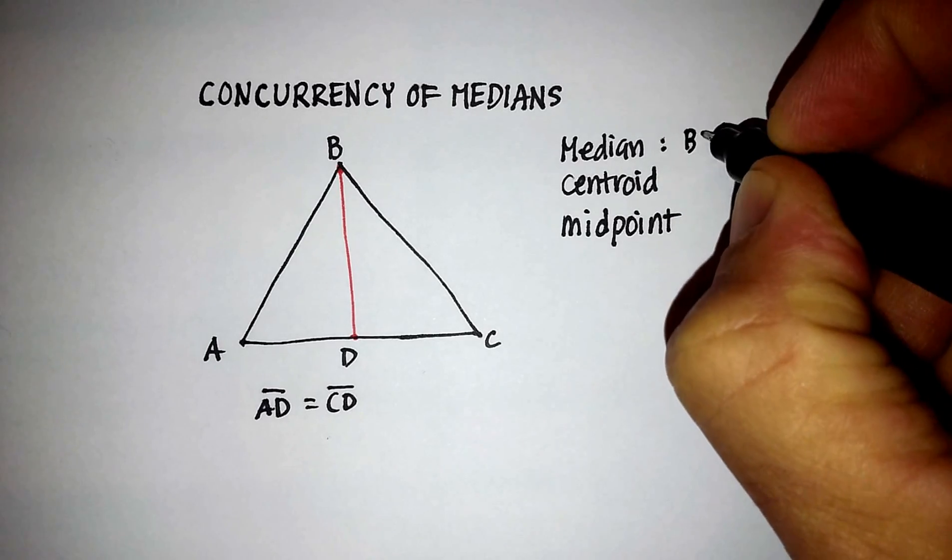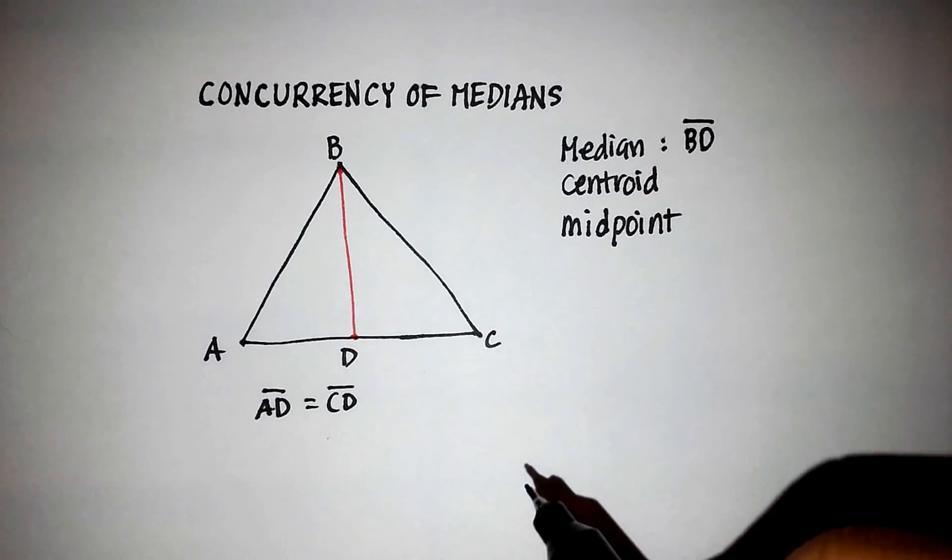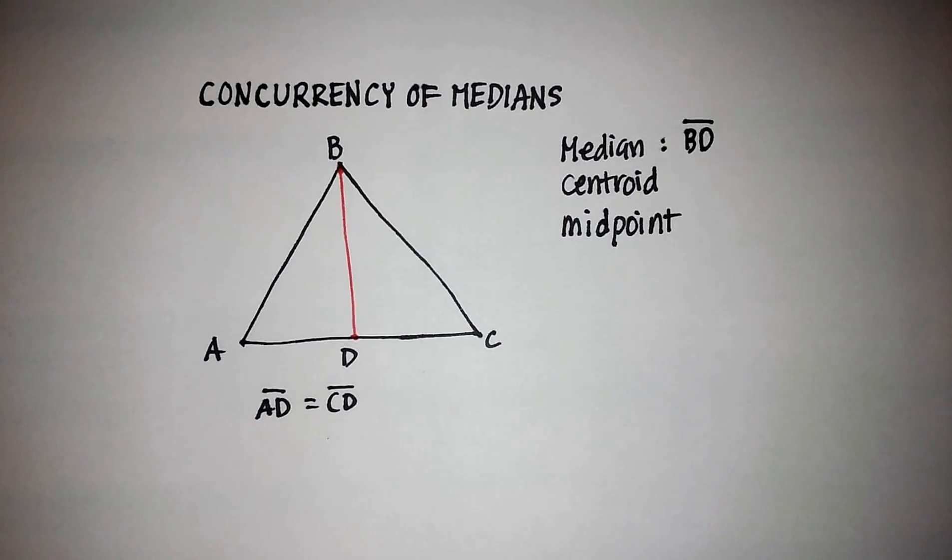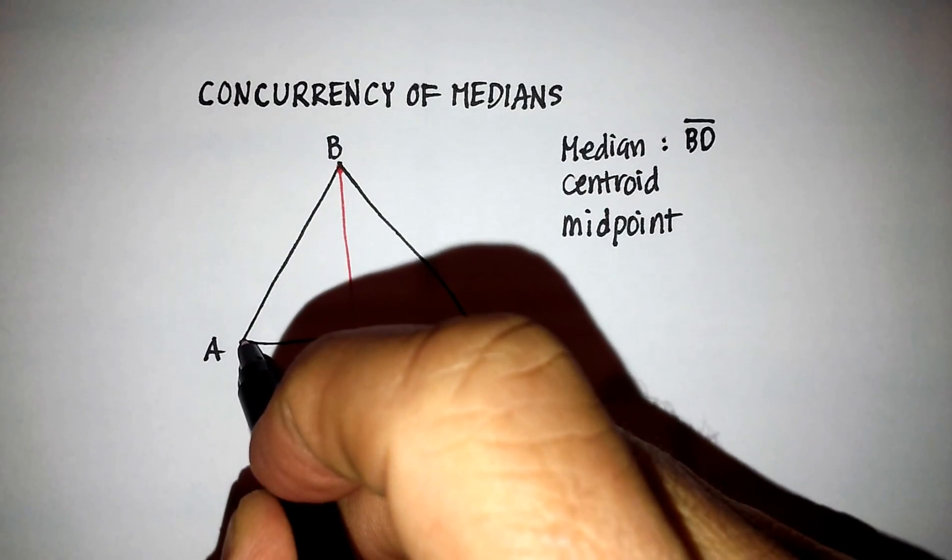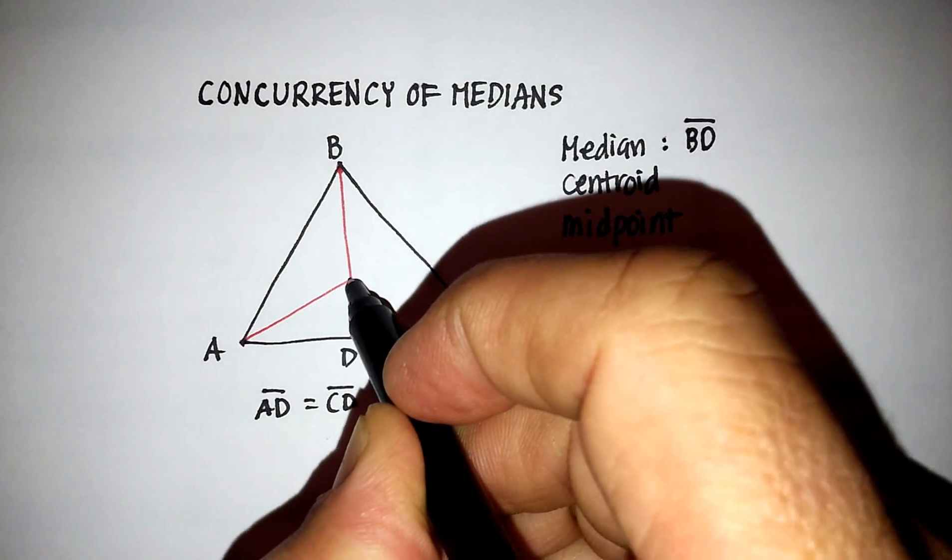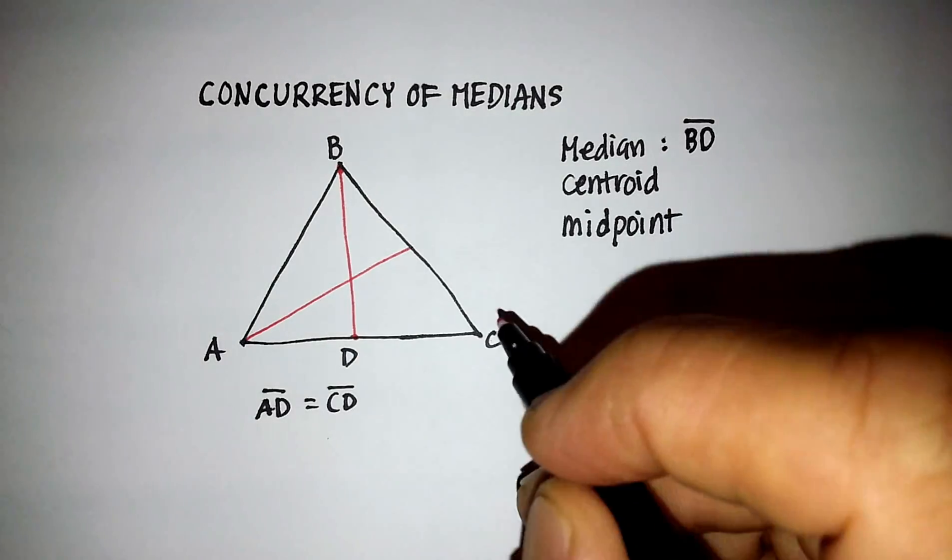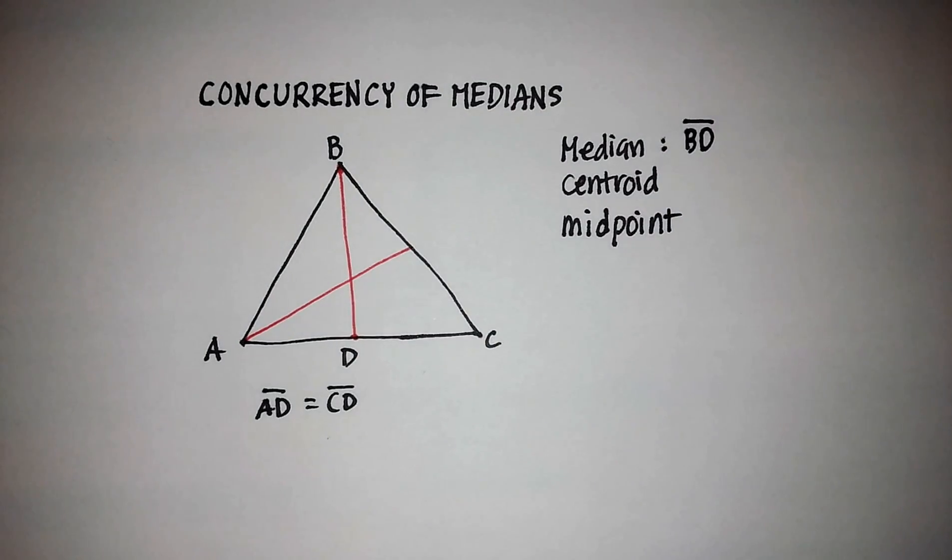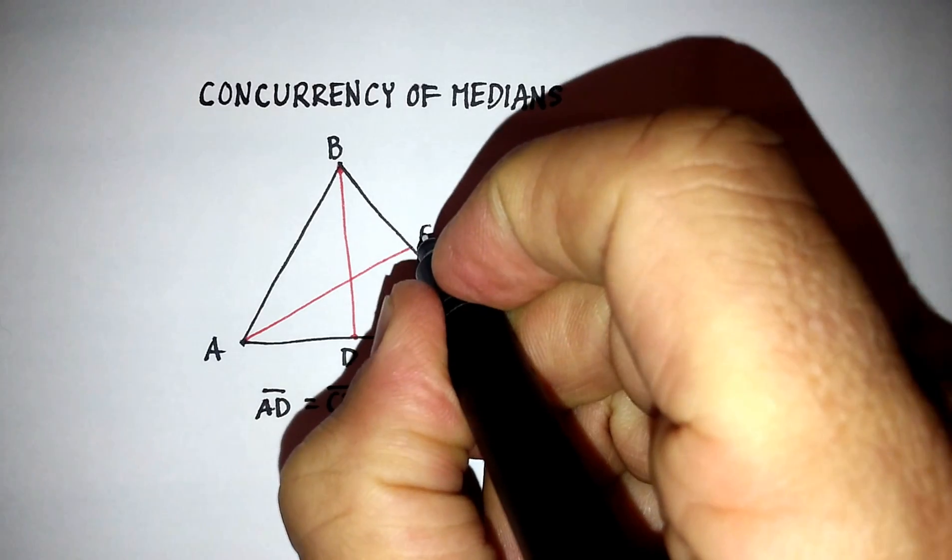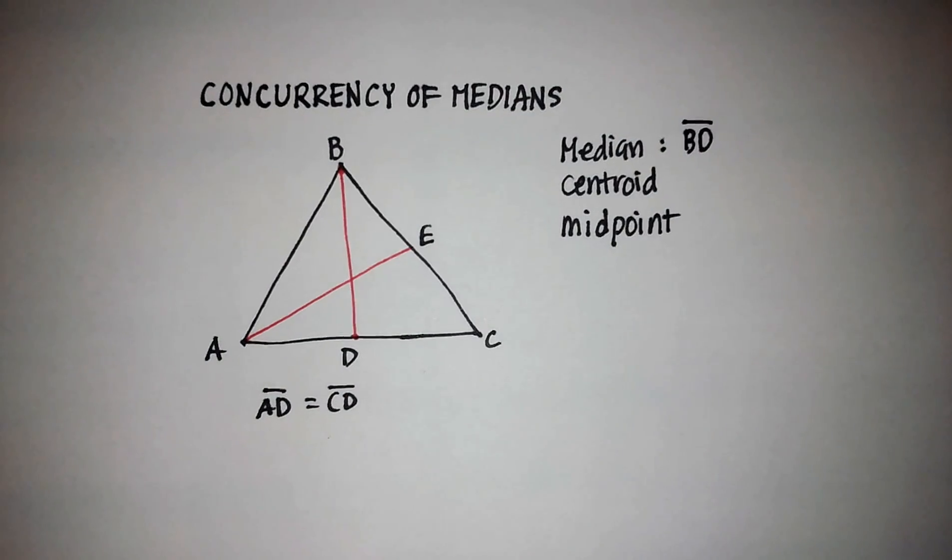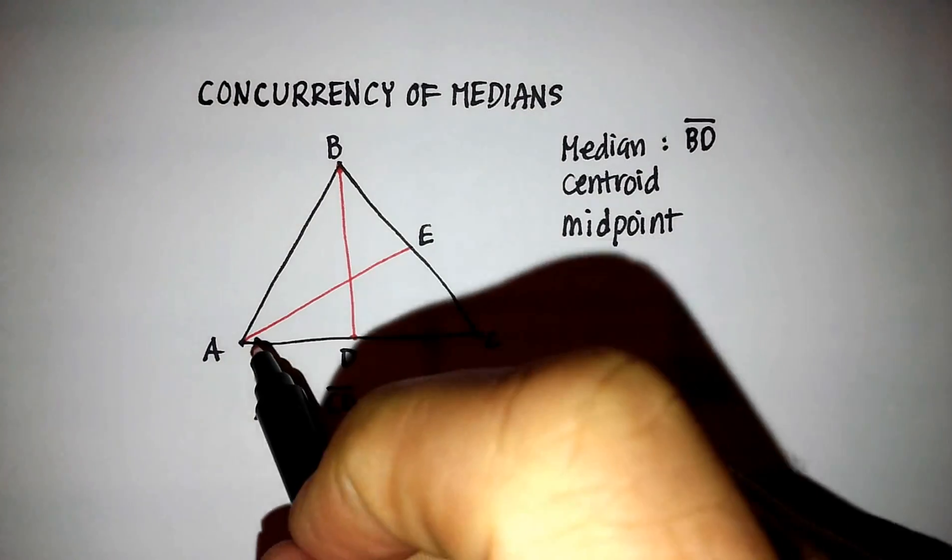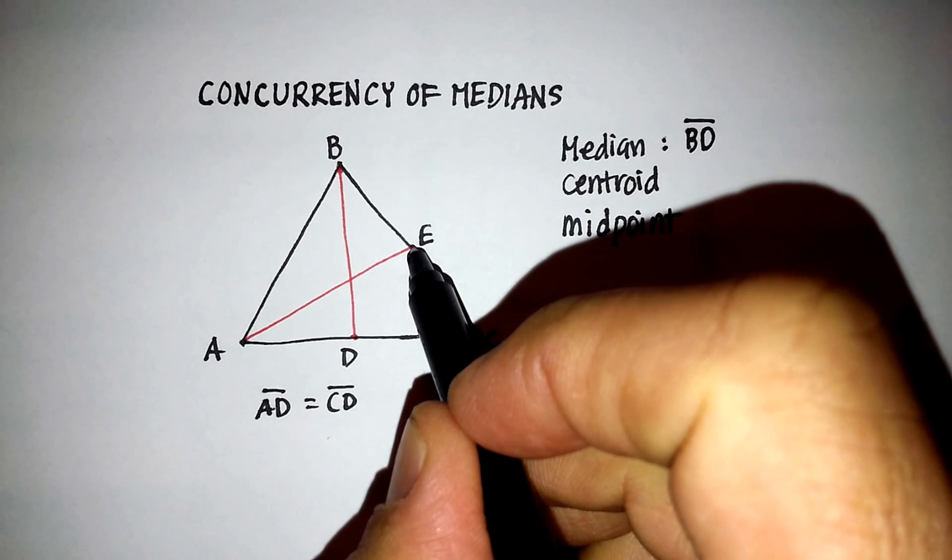So let's just start writing some of these medians. There we go. BD is a median. All right. Now, we also have this one here. And line segment, and we're going to have to give this another letter over here. So let's go to E. So line segment AE is also a median.